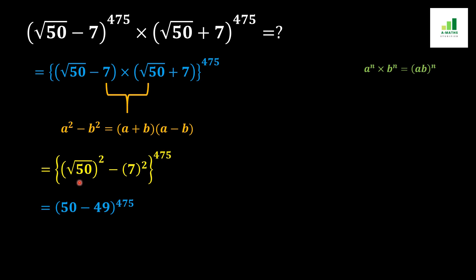The 50 will come out from the root and equal 50, minus remains the same, and 7 squared equals 49. So 50 minus 49 equals 1.